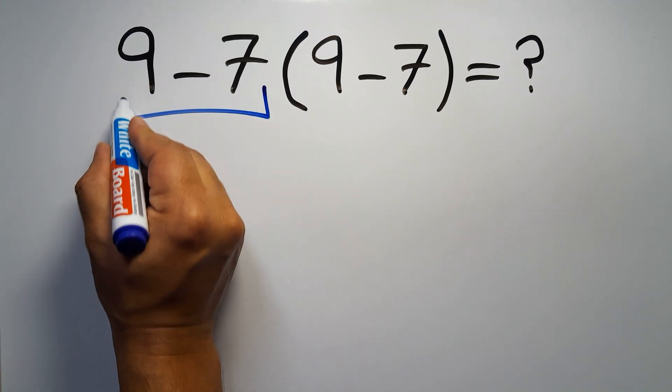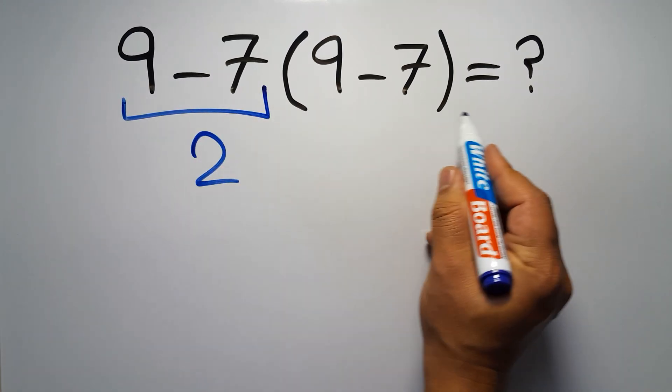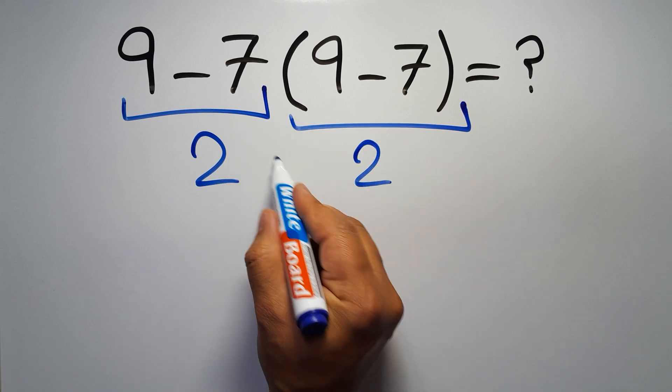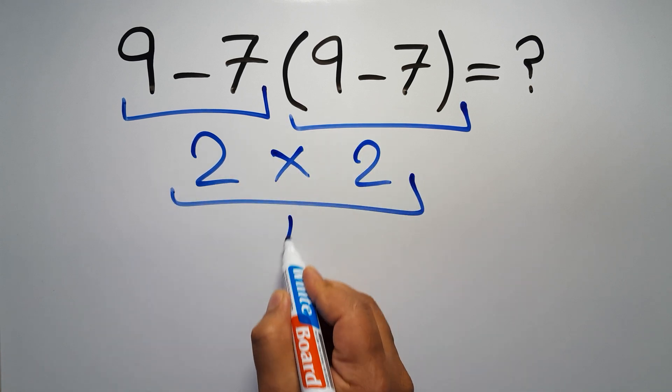9 minus 7 gives us 2, and again here inside this parentheses we have 9 minus 7, so 2 times 2, which gives us 4.